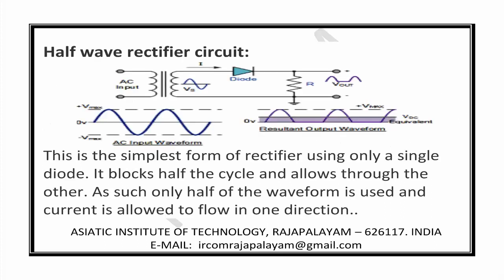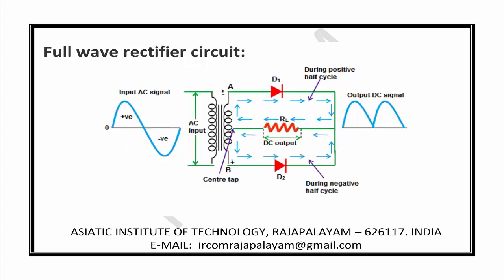Half-wave rectifier circuits. See the diagram as shown in the figure. This is the simplest form of rectifier using only a single diode. It blocks half the cycle and allows through the other. As such, only half of the waveform is used and current is allowed to flow in one direction.